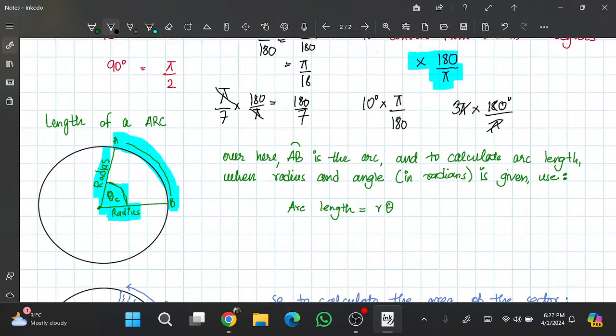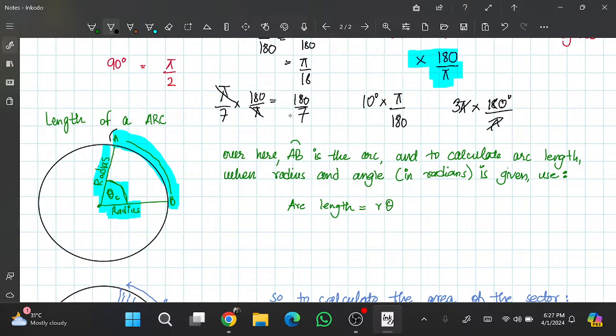Then you need to know the length of the arc. From A to B is what we call the length of the arc. In order to get the length of the arc, what you have to do is your radius times your angle. Now remember that this angle will always be in radian measure. Let me give you an example to explain it.